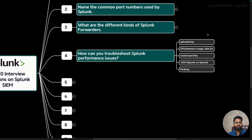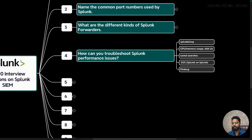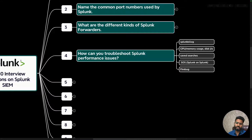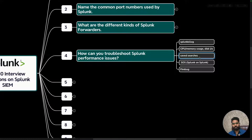What is important is explaining why you are checking each item. For example, you check the splunkd log file to see if any limit has been exceeded or if there is a backend database retrieval issue. Next, check server performance — CPU, memory usage, and disk I/O. Then check the number of saved searches currently running and their resource consumption, which you can verify on the search head dashboard.